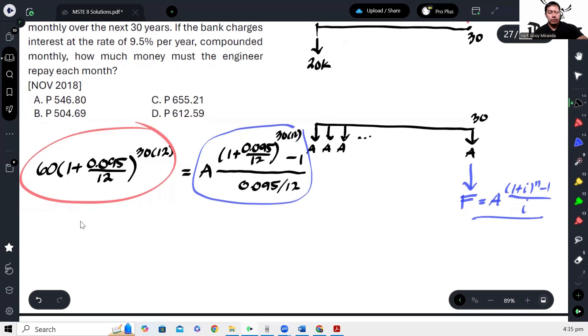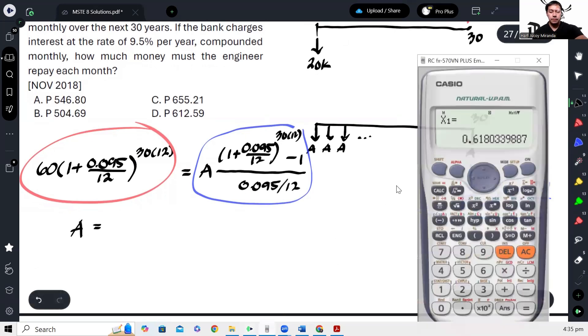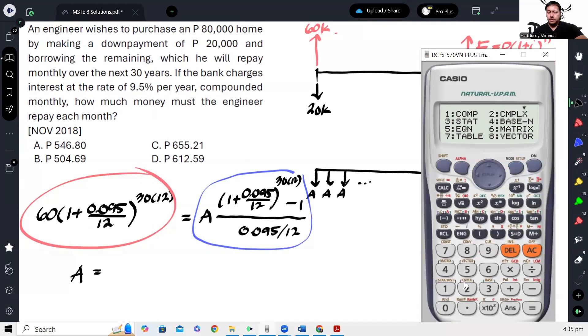So therefore, this would be, we will be able to calculate for A. So 60K, 60K times 1 plus 0.095 over 12 raised to 30 times 12. Tapos cross-multiply natin itong 0.095 over 12. Tapos divide natin itong, ito nasa numerator, 1 plus 0.095 over 12 raised to 30 times 12 minus 1. And that gives us 504.51 pesos.